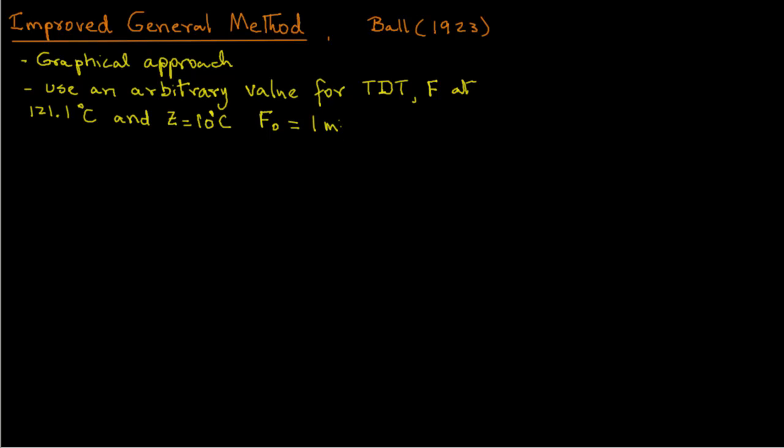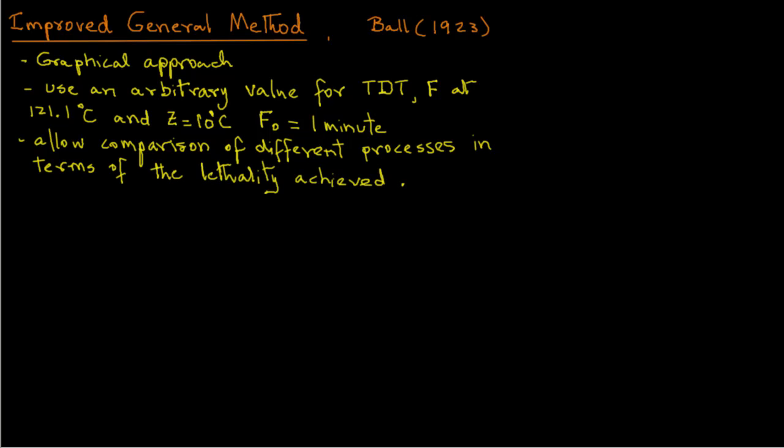So Ball suggested that we select an arbitrary value of F0 as one minute. By doing so, the procedure allows comparisons of different processes in terms of the lethality achieved. Let's look at the mathematical basis first, and then we will consider an example.